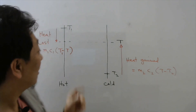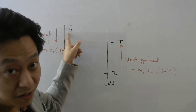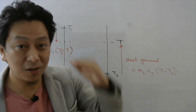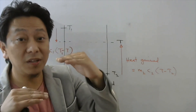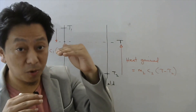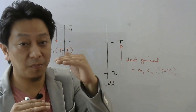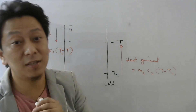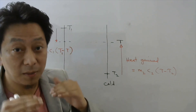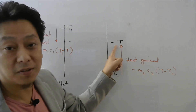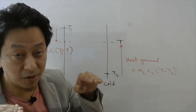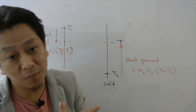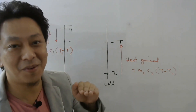Thermal equilibrium means both bodies acquire the same temperature. When you bring the two bodies in contact, the hot body's temperature will drop and the cold body's temperature will rise until both acquire the same temperature. Once they have the same temperature, heat exchange stops — there is no longer a hot body and cold body.